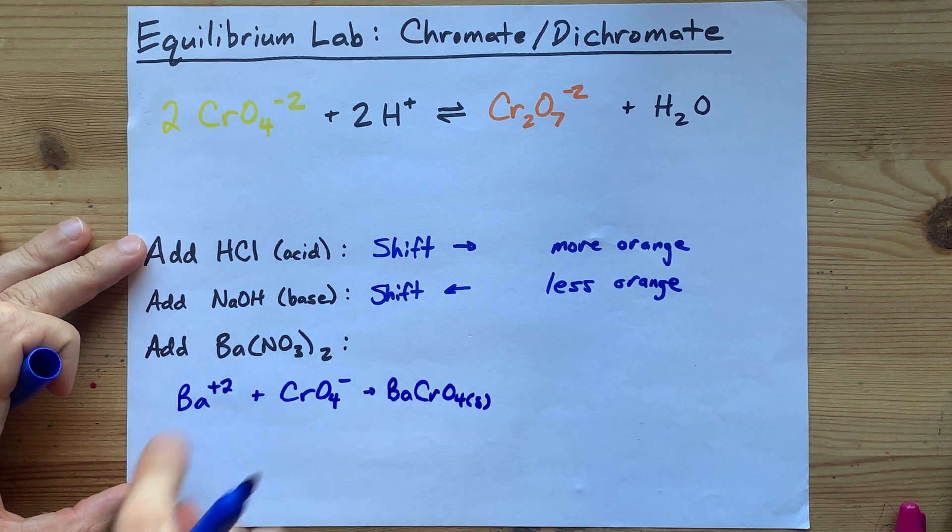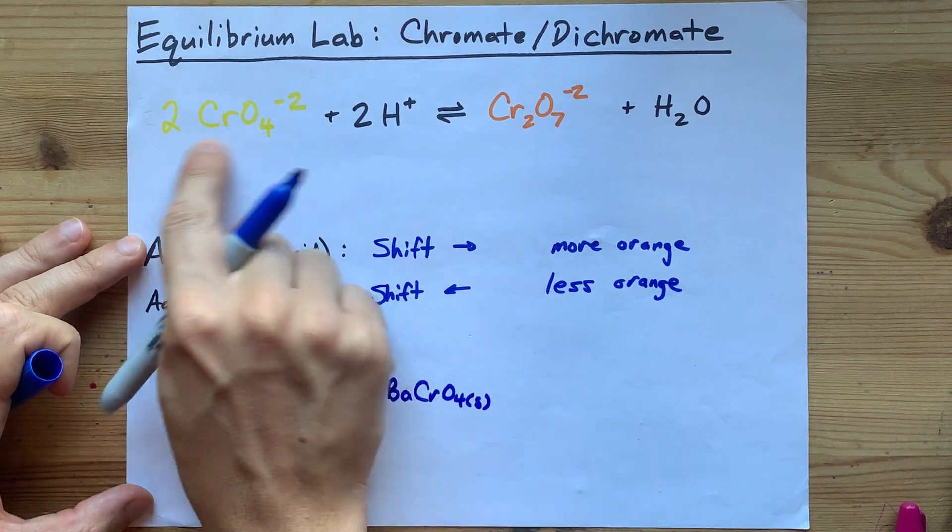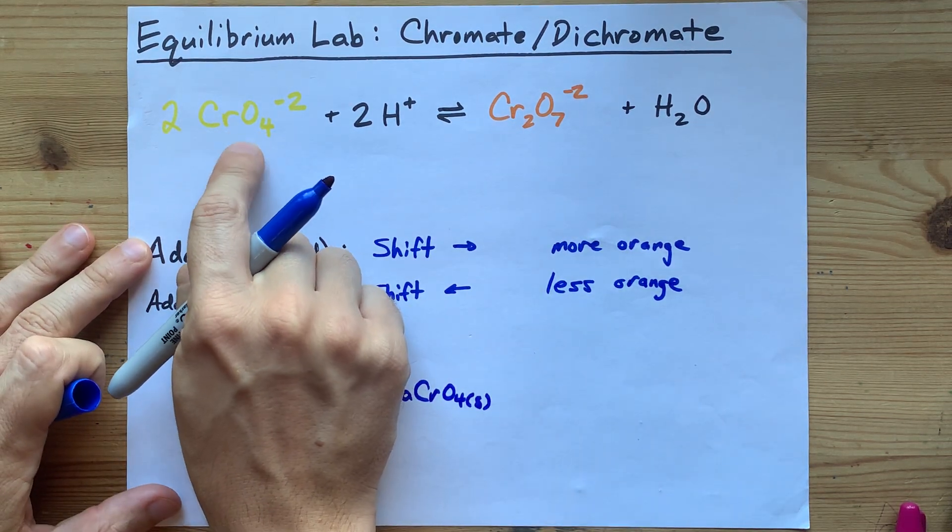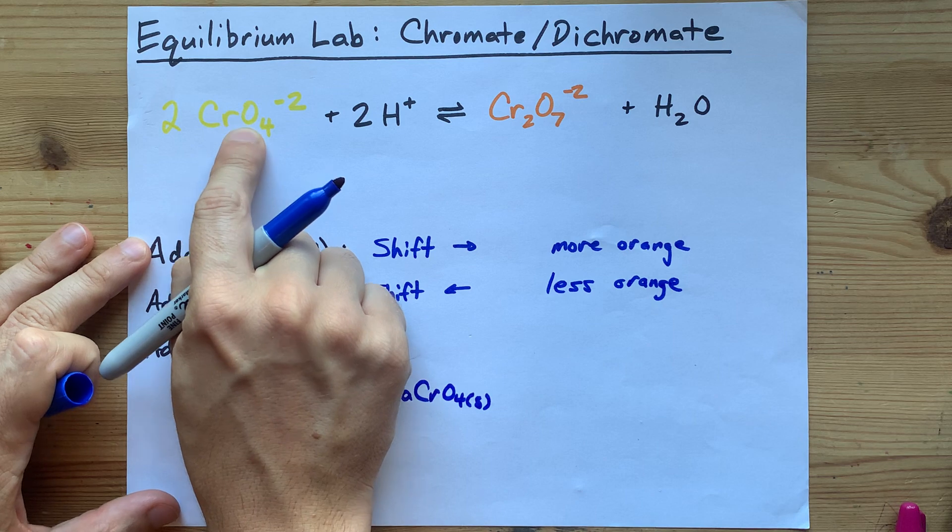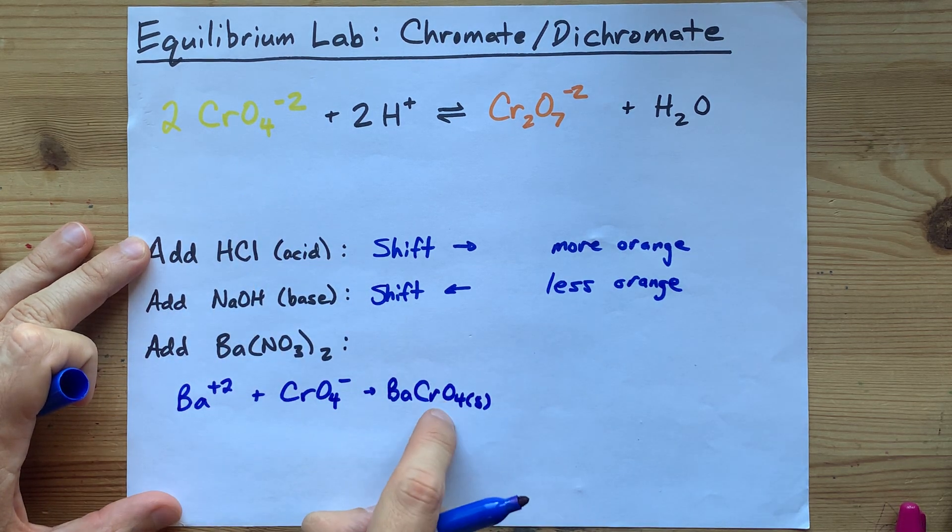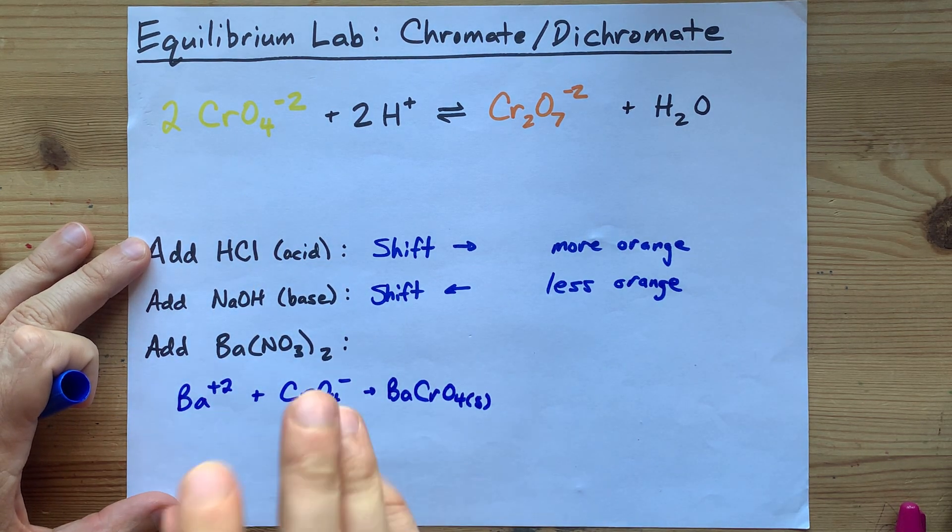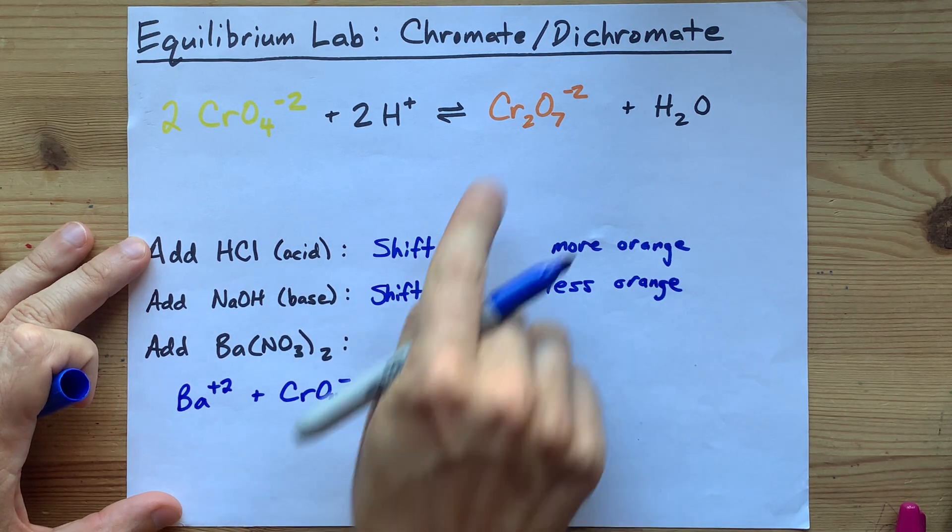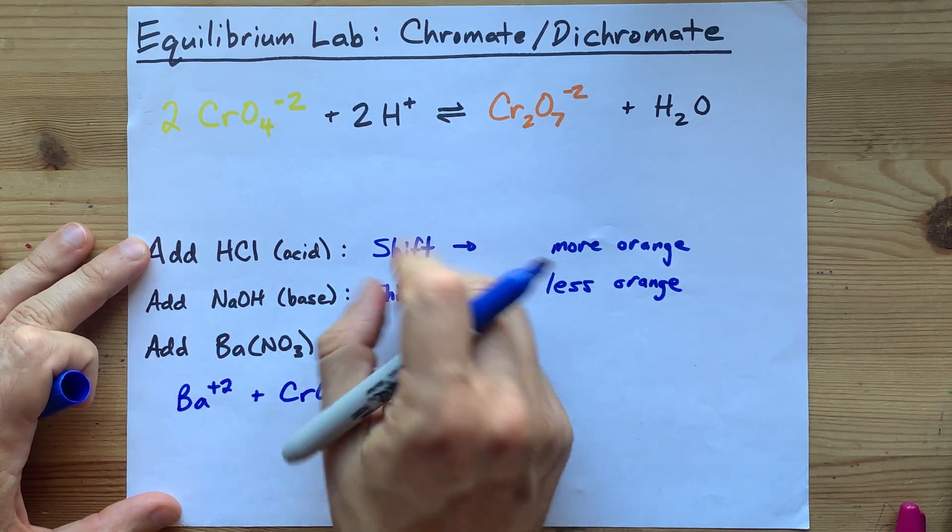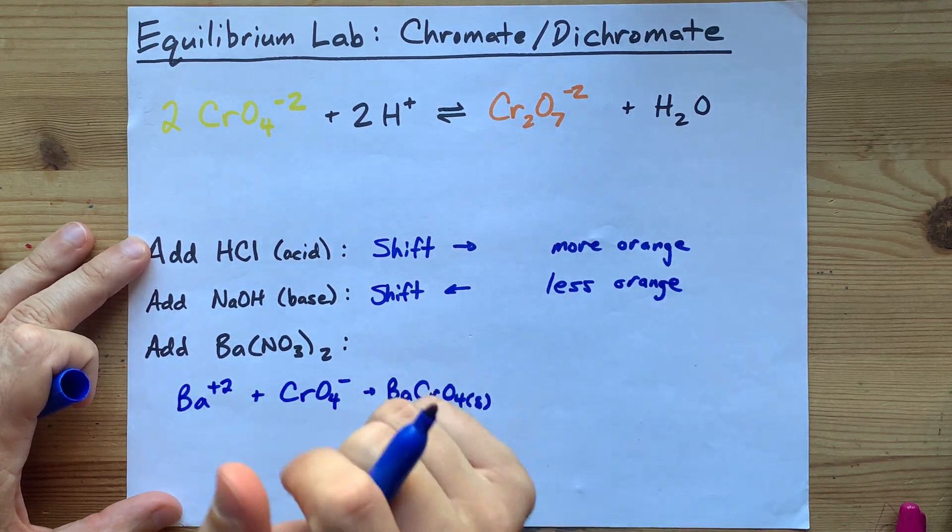So the effect of adding barium is that this, the actual ion that is yellow, is being taken out of solution and put into a solid precipitate. Barium does not precipitate with dichromate. That's why it's interesting for us to do.